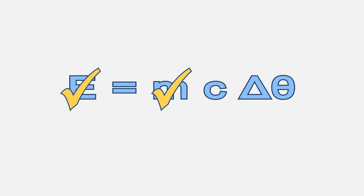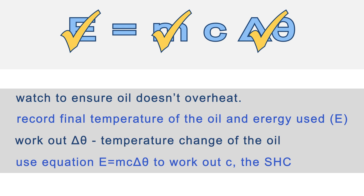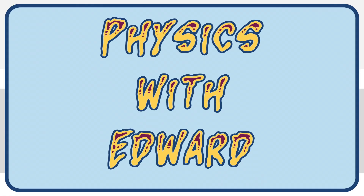We now have all the data we need to work out the specific heat capacity, so write something like: use the equation E equals mc delta theta to work out c, the specific heat capacity. You can write the equation in words or symbols, but there's no real need to show the algebra to work out c equals — although of course if you want to, it's not going to do you any harm.